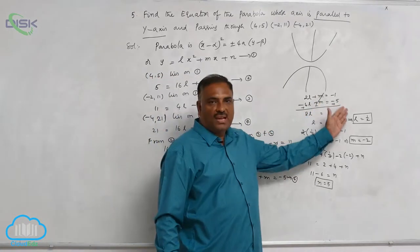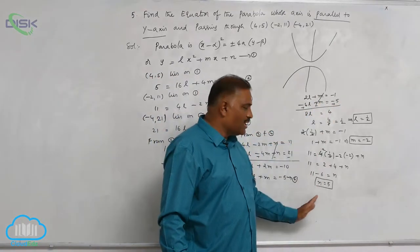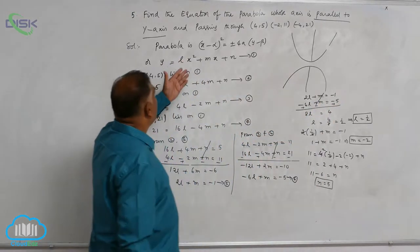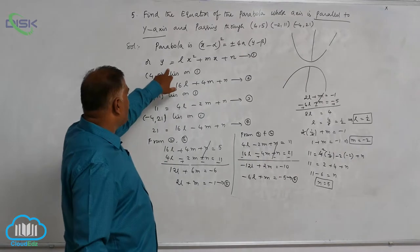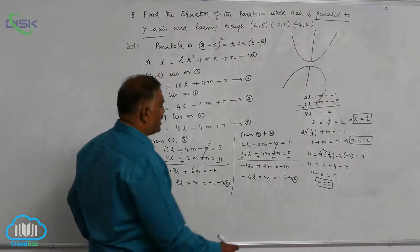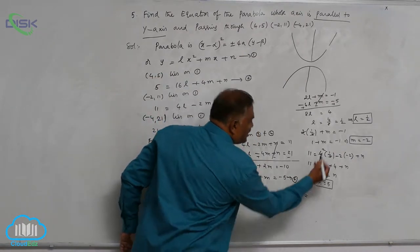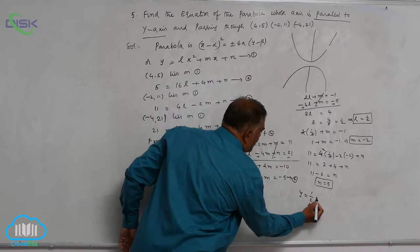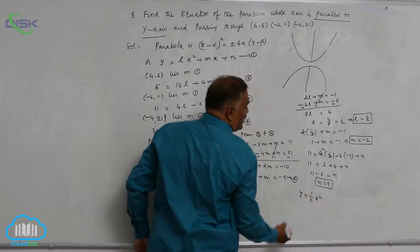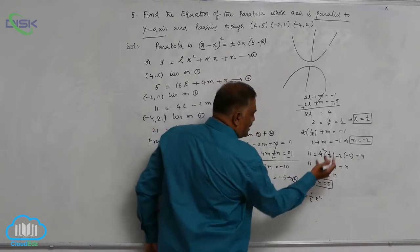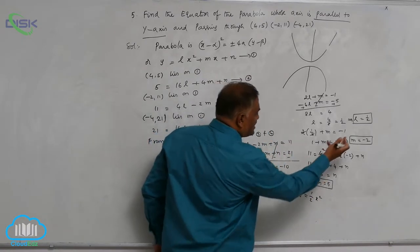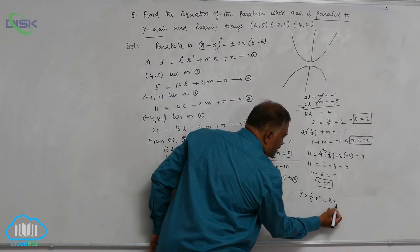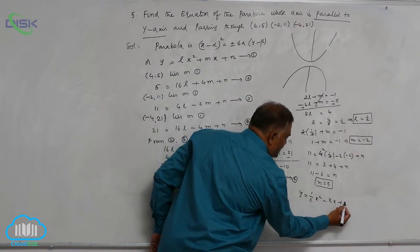After getting the values of L, M, N, you can simply substitute in the first equation like Y is equal to 1 by 2 X square, this is M, M X, Y is M value minus 2, minus 2 X plus 5.